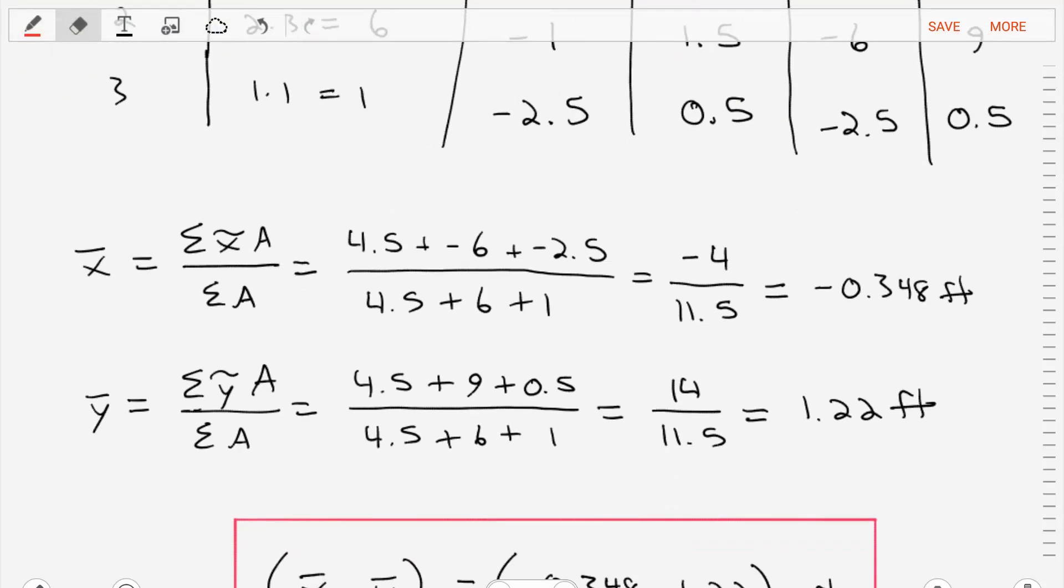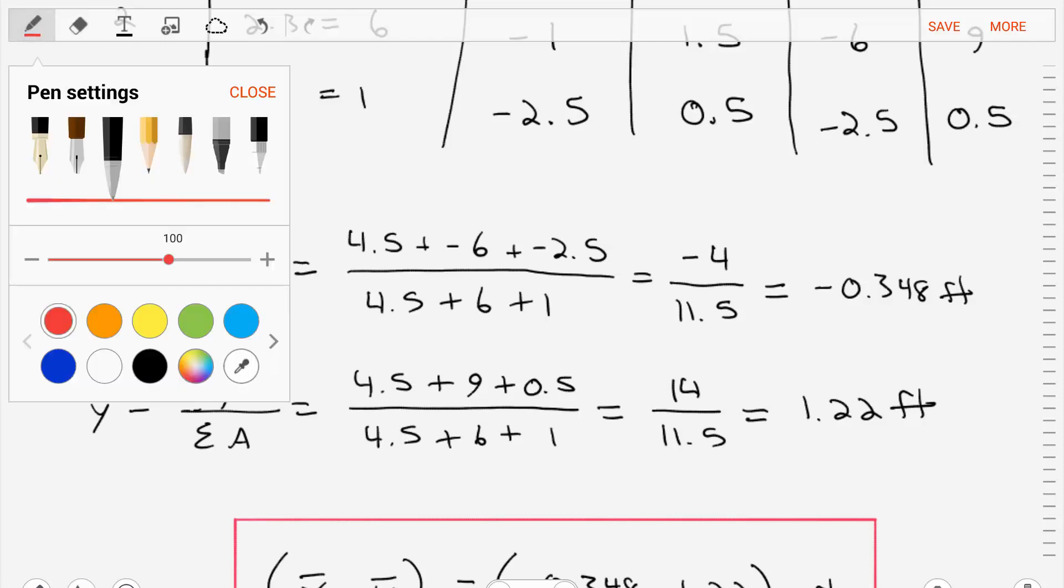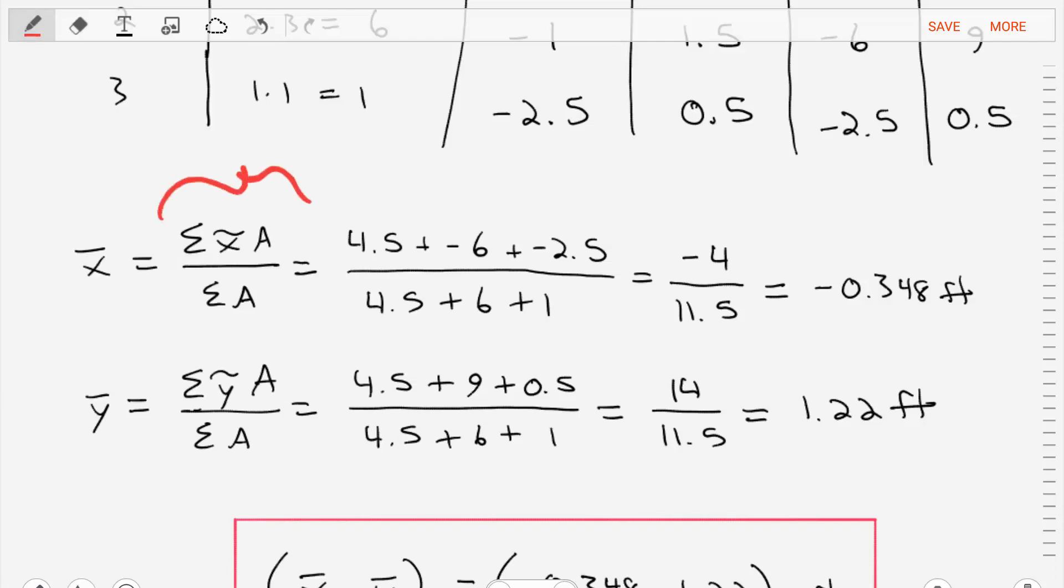To do that, we have equations. In the book, the expression for finding x bar in a composite body is as follows, where x bar is equal to the sum of the x tilde times A divided by the sum of the areas.